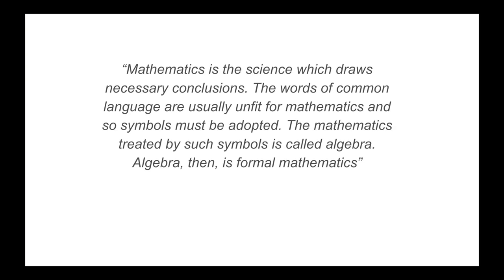We're going to start with a quote from a book by Benjamin Peirce called Linear Associative Algebra, written in 1882. In it he says that mathematics is the science which draws necessary conclusions. The words of common language are usually unfit for mathematics, and so symbols must be adopted. The mathematics treated by such symbols is called algebra. Algebra, then, is formal mathematics.